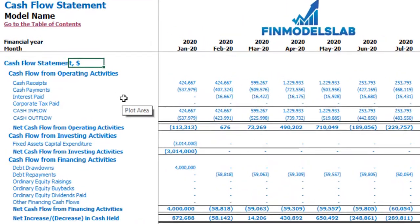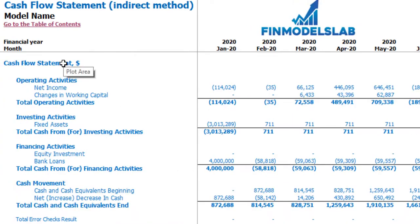On the cash flow statement you may see your cash flow broken down by cash flow from operating activities, cash flow from investing activities, and cash flow from financing activities. The same information you may see on the cash flow statement indirect method — operating, investing and financing activities — but in a more collapsed form that's easier to read.